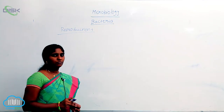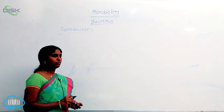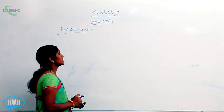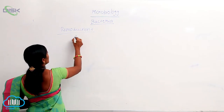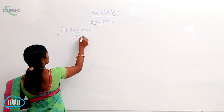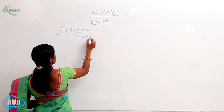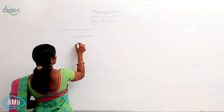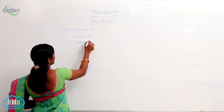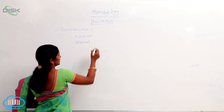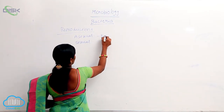Reproduction — bacteria reproduction. Two types: asexual reproduction and sexual reproduction. Asexual reproduction is binary fission.